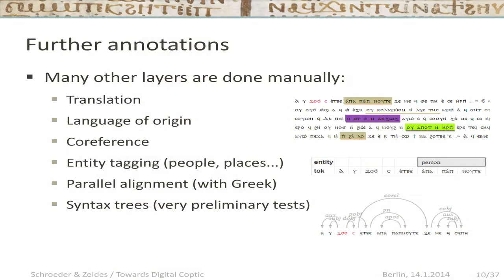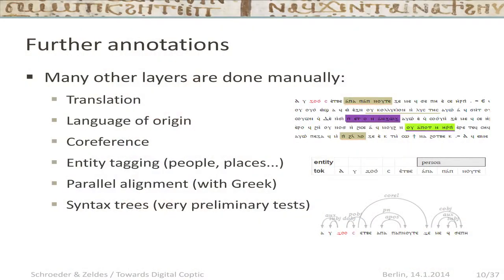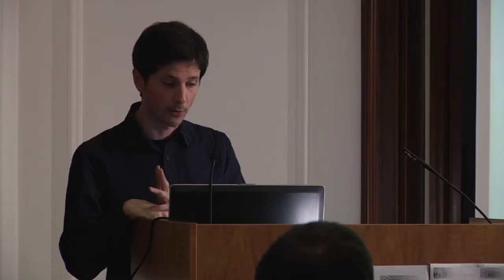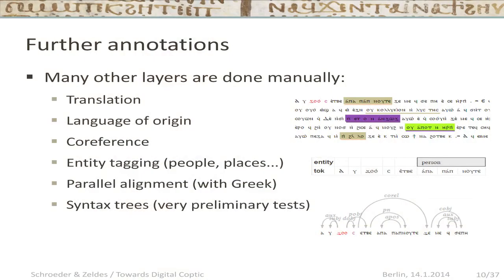We've also done some manual annotations: translation, language of origin for words (whether Greek or Latin origin), some coreference annotation — explicitly annotating when two phrases refer to the same entity. In the top right image, you see rectangles colored in different colors: 'Apa Papnute' is Saint Paphnudius, and 'the old man' also refers to Saint Paphnudius, so they're colored the same. We've only done coreference annotation for the Apophthegmata. We've also done entity tagging of people and places, parallel alignment with Greek at the sentence level, and some very preliminary syntactic annotation not yet online.